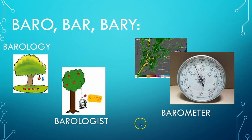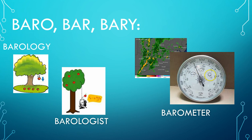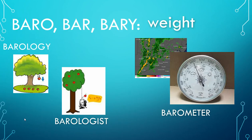Another word that uses this root is barometer — a word you've probably heard on the evening news or weather forecast. When the barometer drops, that's when we start to get bad weather: overcast skies, rain, and storms move in. The lower the barometer goes, the worse the weather becomes, and you can see that reflected on the barometer's icons. So barrow, bar, or berry means weight, and you'll usually see this root in words dealing with gravity or pressure.